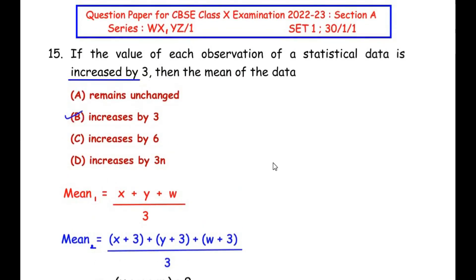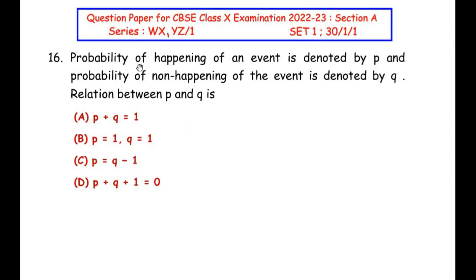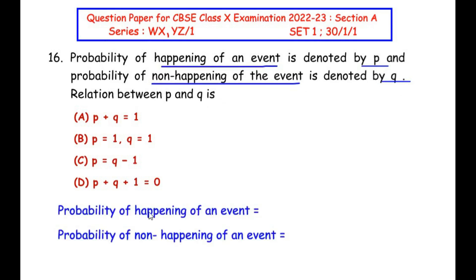Now let us move on to the 16th question. The 16th question is from the probability chapter. Probability of happening of an event is denoted by p and probability of non-happening of an event is denoted by q, so relationship between p and q is—so let us begin by writing the probabilities first.